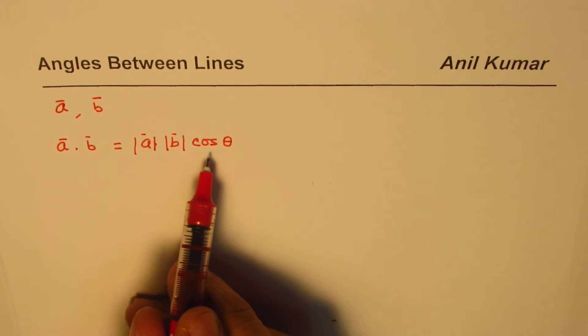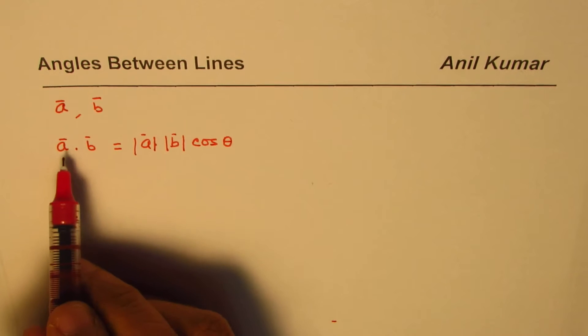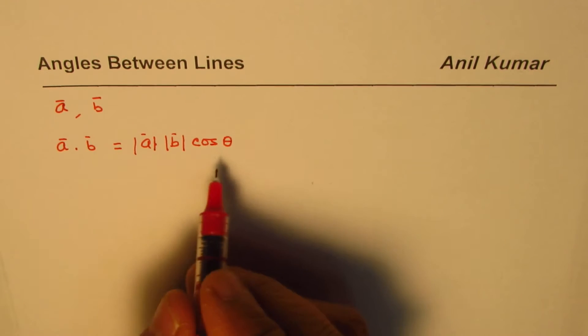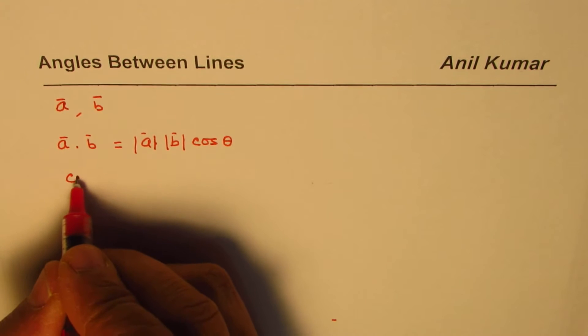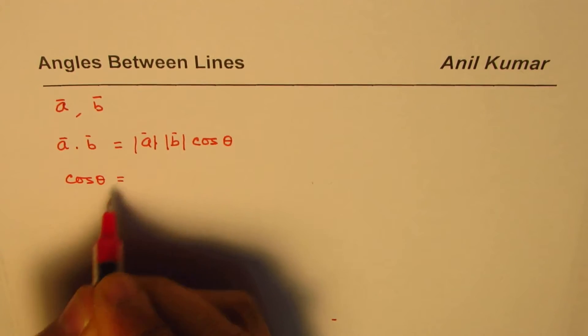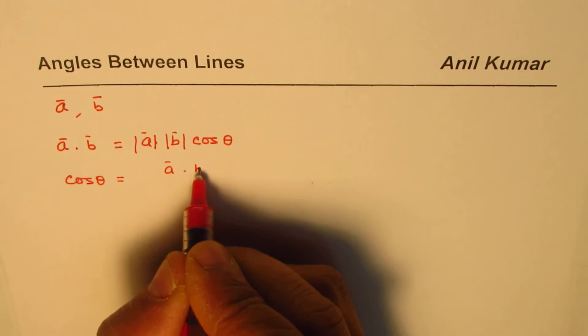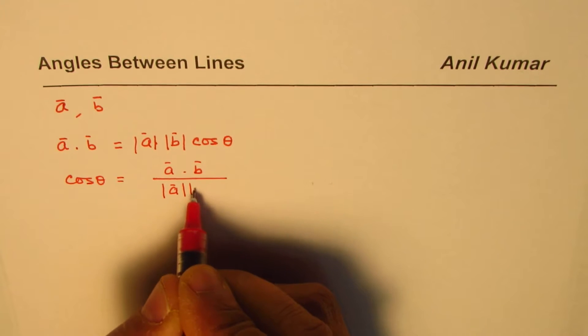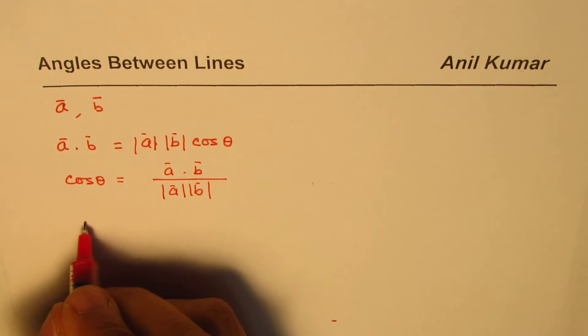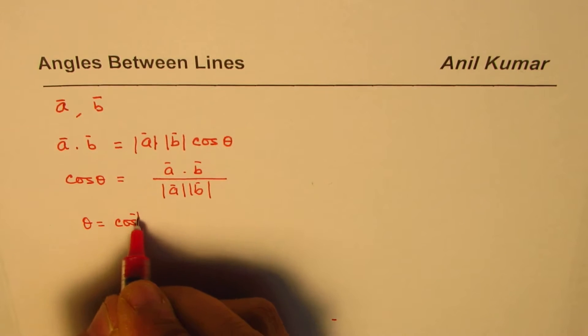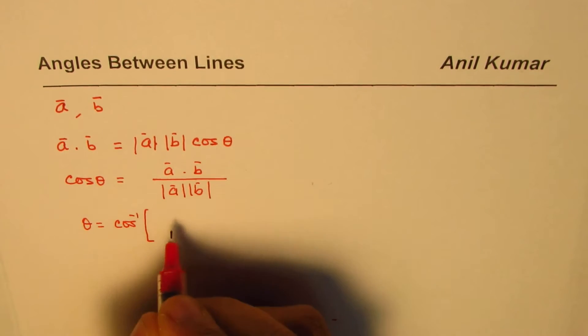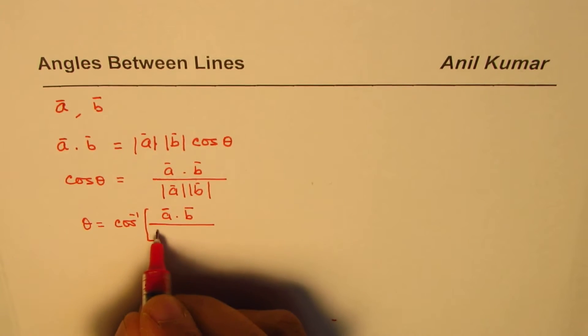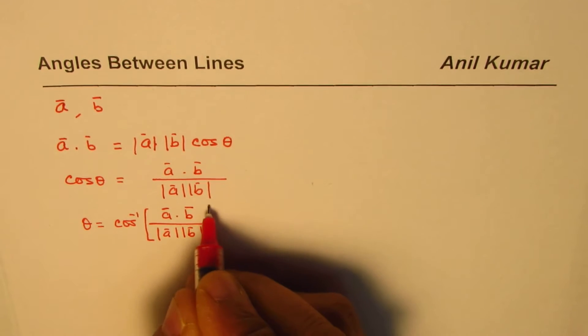This equation can be used to find the angle between lines where a and b are representing the lines. We can rearrange and write that cos theta equals the dot product of two vectors divided by their magnitudes product. So theta equals cos inverse of the dot product divided by the magnitude product.